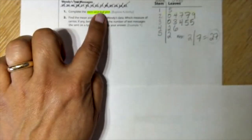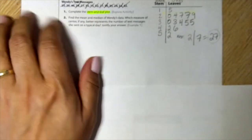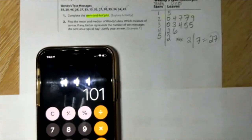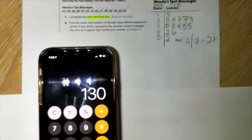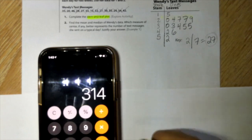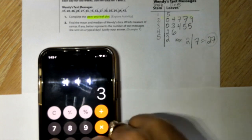The key means we have to add all the numbers and then divide it by how many numbers we have. 35, 20, 46, 29, 27, 33, 15, 52, 27, 30, 35, 24, 34, and 42. And divide it by one, two, three, four, five, six, seven, eight, nine, 10, 11, 12, 13, 14.